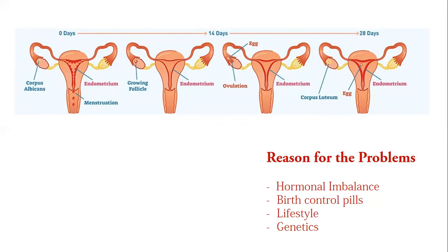And lifestyle — what is your lifestyle? Food and stress are involved. Stress is a major factor, and it is related to hormones. And then genetics — genetics is a hereditary chain. You have to be aware that around 10 to 40 percent of the cause is genetics.